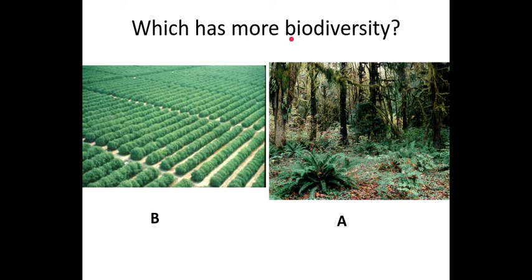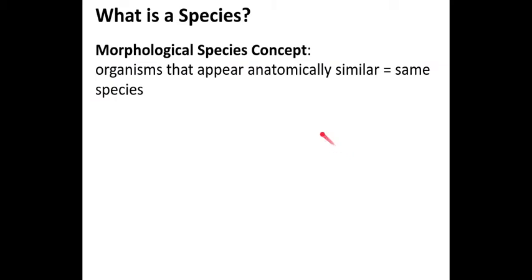When we talk about the diversity of living things, we use the word biodiversity — 'bio' meaning living things — and having a variety of different living things is what biodiversity is all about. When we talk about species, there are a number of different ways of looking at it in biology, and we'll go through some of those more common definitions.